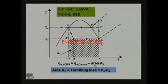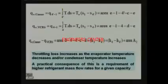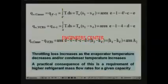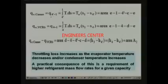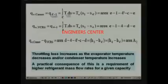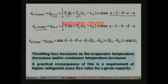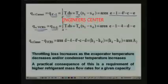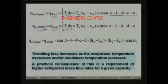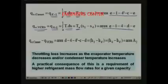We can derive the expression for this. The refrigeration effect of the Carnot cycle is the heat transfer during process 4 dash to 1, which is the integral of T dS from 4 dash to 1. Since temperature remains constant, this equals T_E into (S1 minus S4 dash), equal to area E1 4 dash CE. The refrigeration effect of the vapor compression refrigeration cycle is heat transfer during process 4 to 1, equal to T_E into (S1 minus S4), equal to area E1 4 DE.